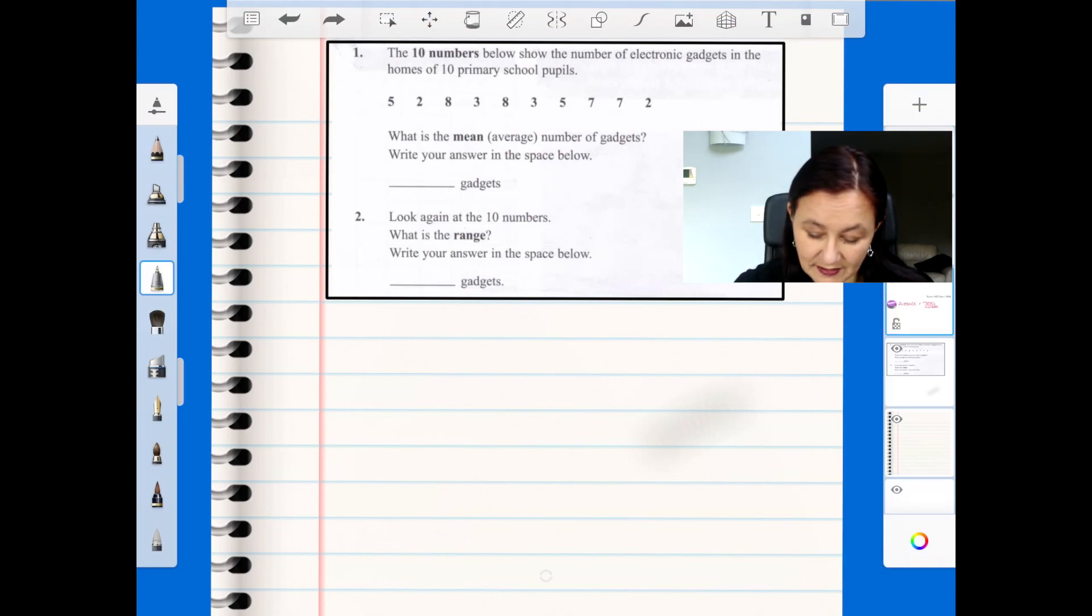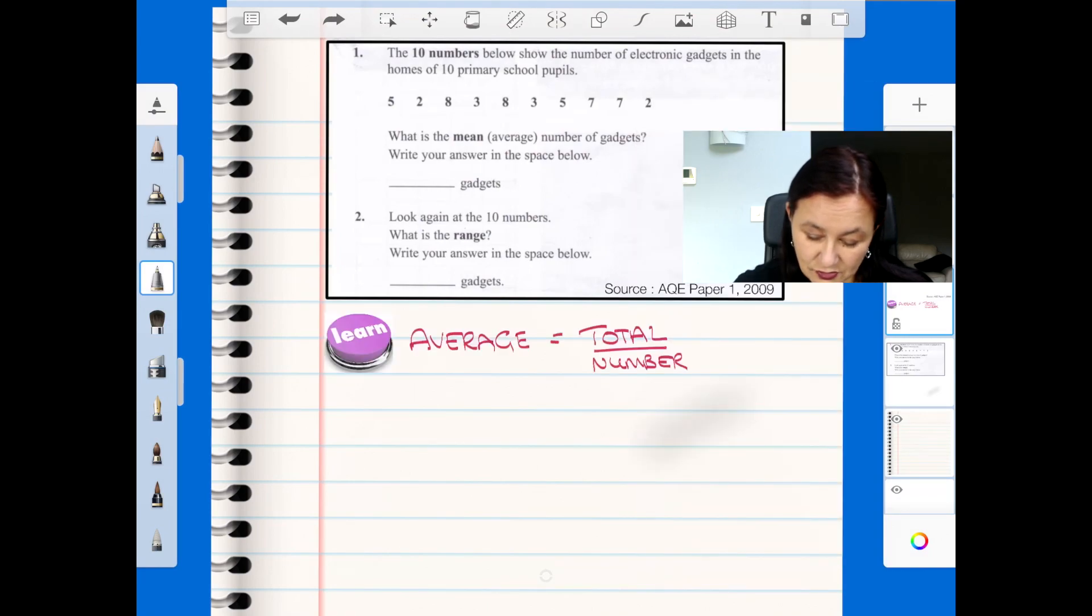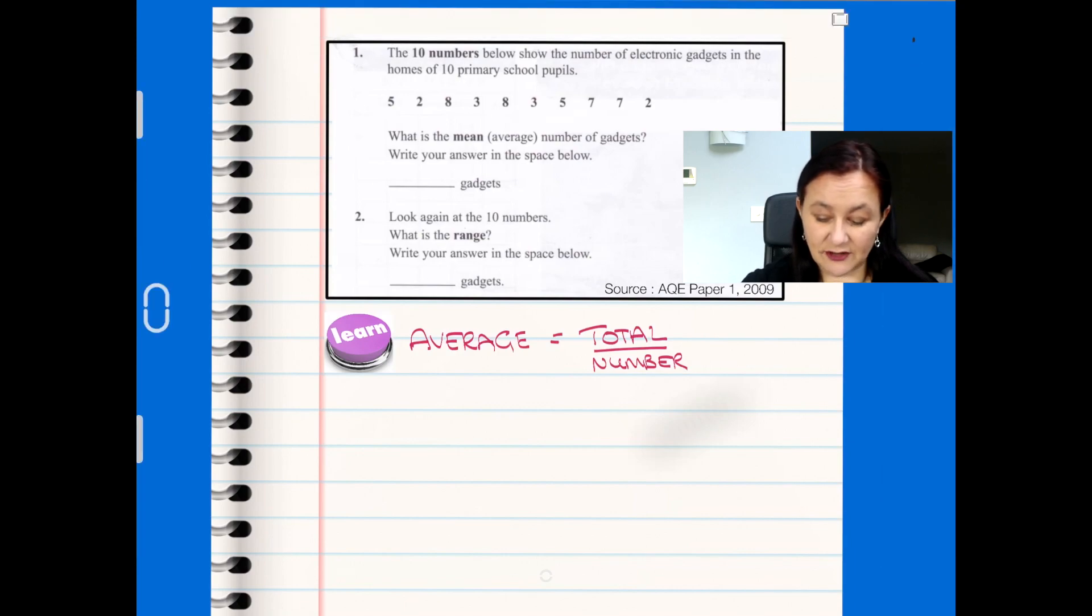So firstly we've got the average is the total over the number. We should know that, the child should know that, if they don't know that, that's the learning point, understanding that equation so that then when the time comes and they're asked to work out the average they can simply do that.